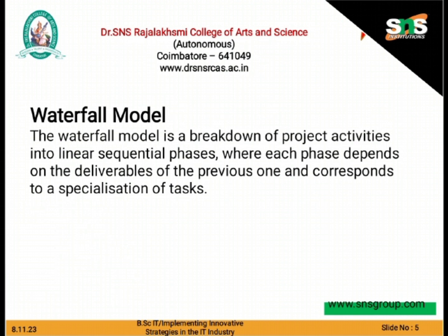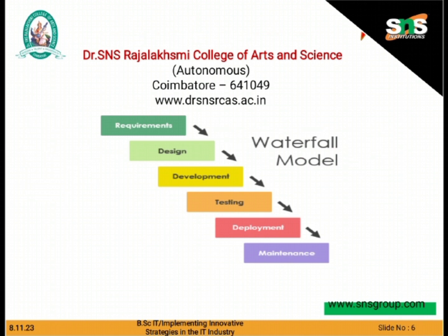The Waterfall Model breaks down entire project activities into linear sequential phases. Each phase depends on the deliverables of the previous one and corresponds to specialization of the task. The output of one phase will be an input for the next phase, making it flow like a waterfall. The first stage is the Requirement stage, where we collect the hardware and software requirements. Next is Design, where we create a blueprint before developing the software application. Then comes Implementation — the actual product development based on the design phase.